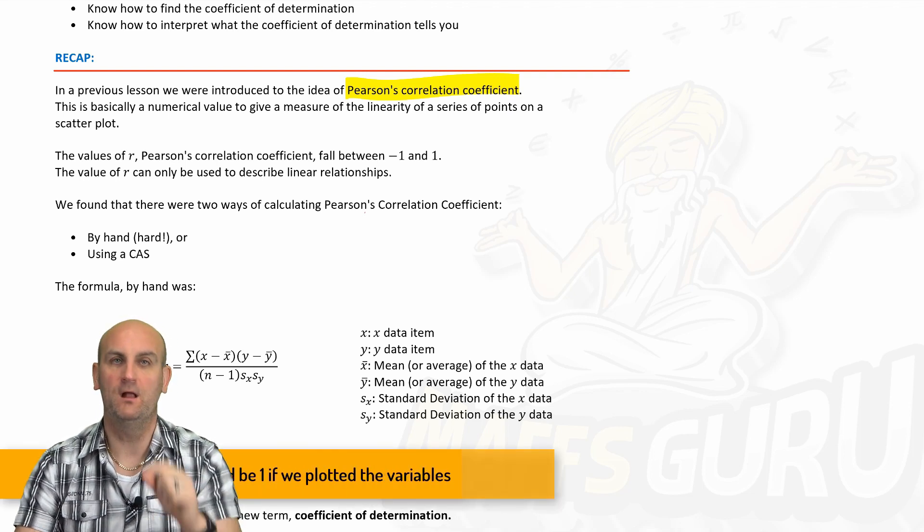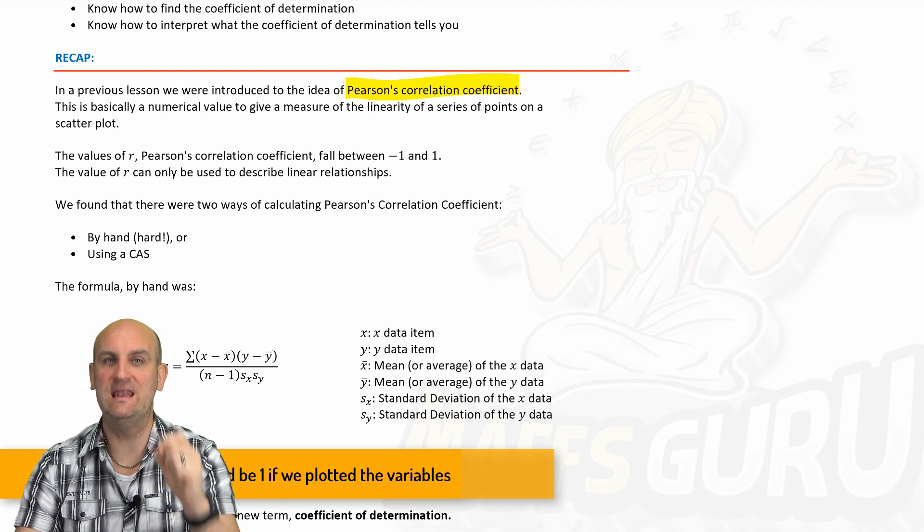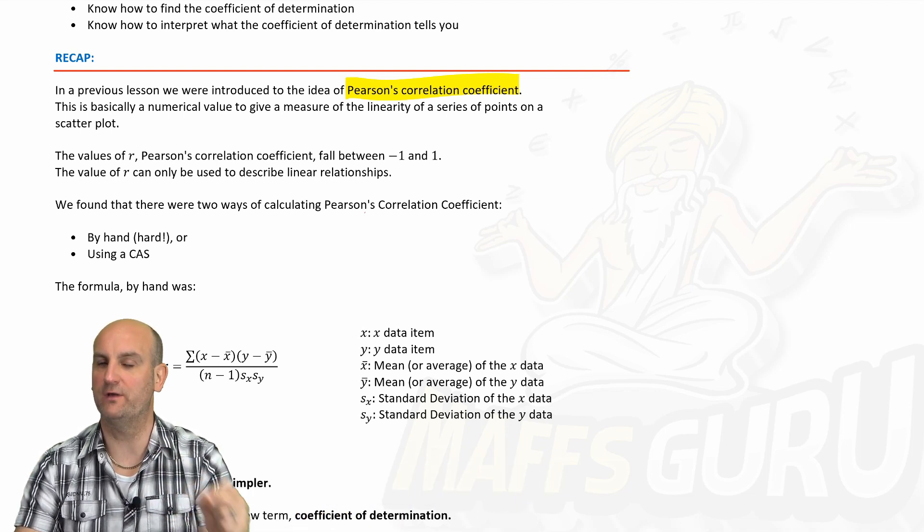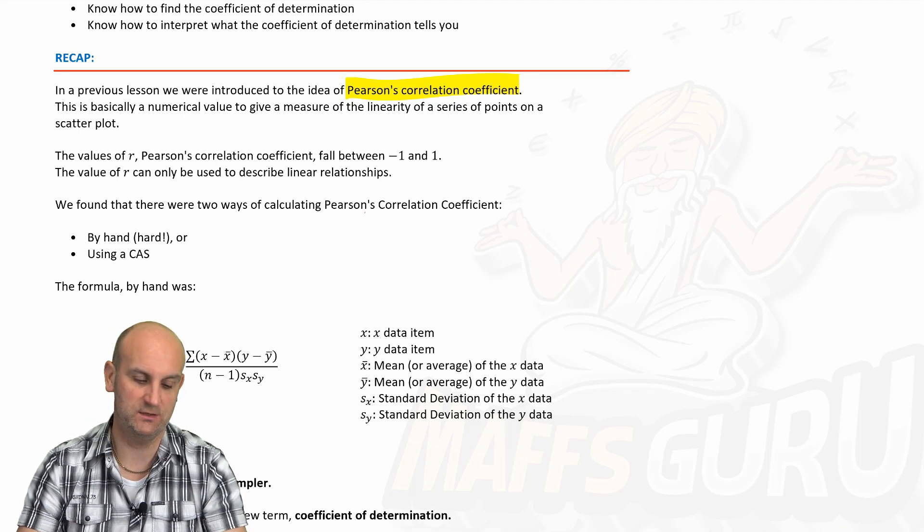So, we have to be careful that the value of R just shows me how linear a series of plots are, not necessarily that there is an association between the two.